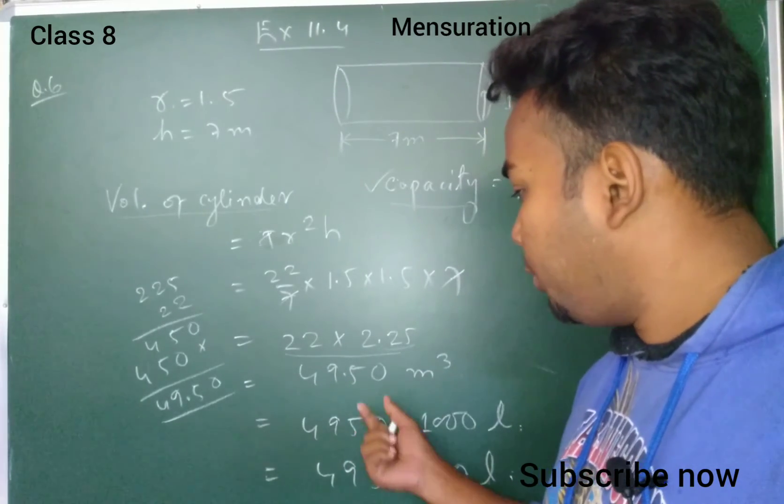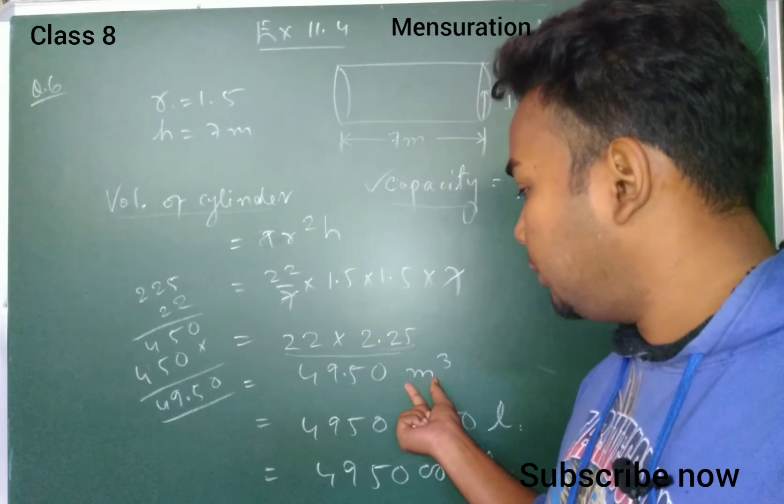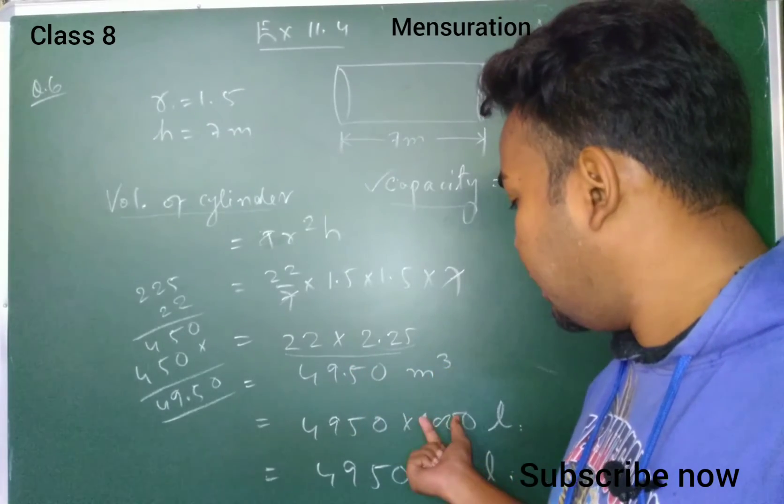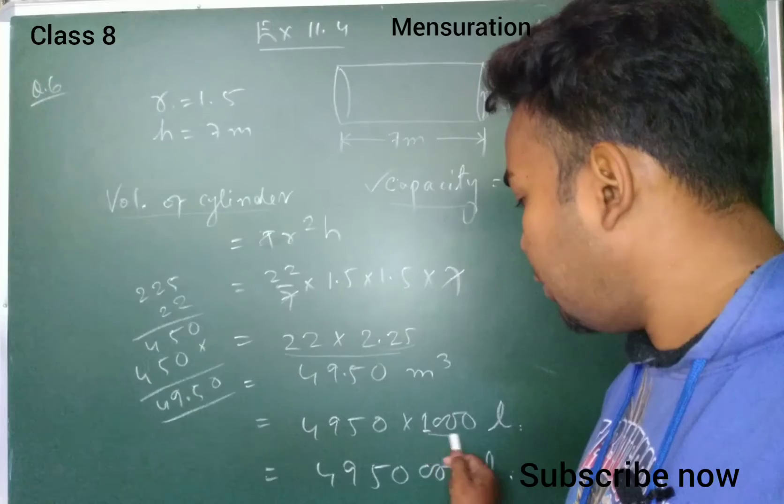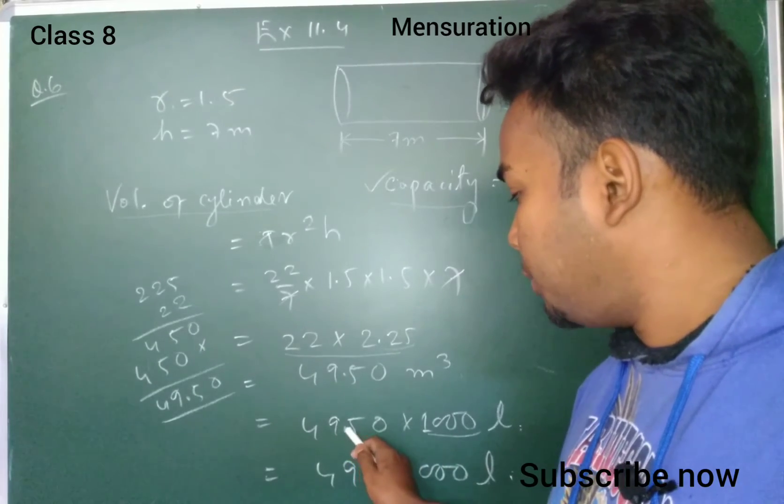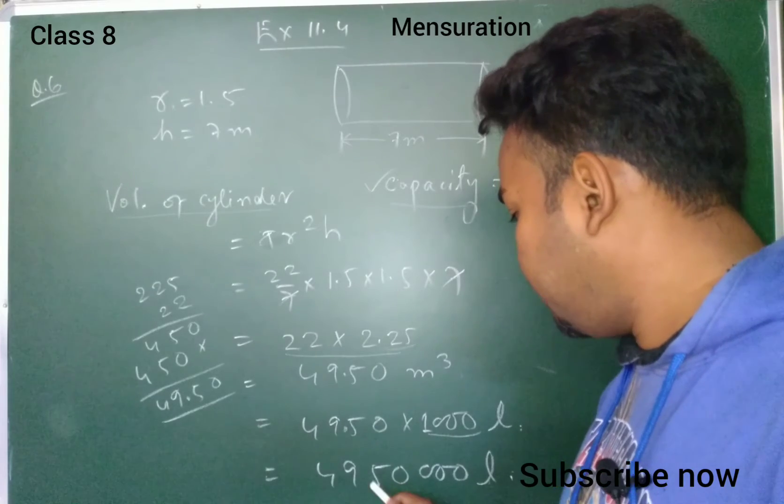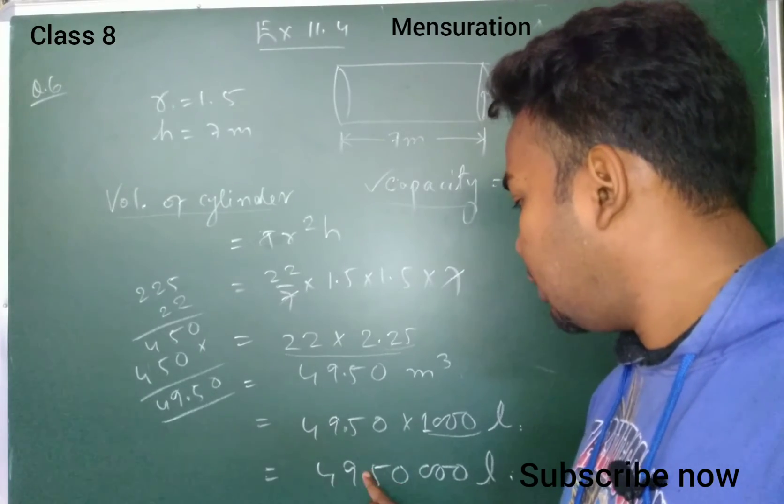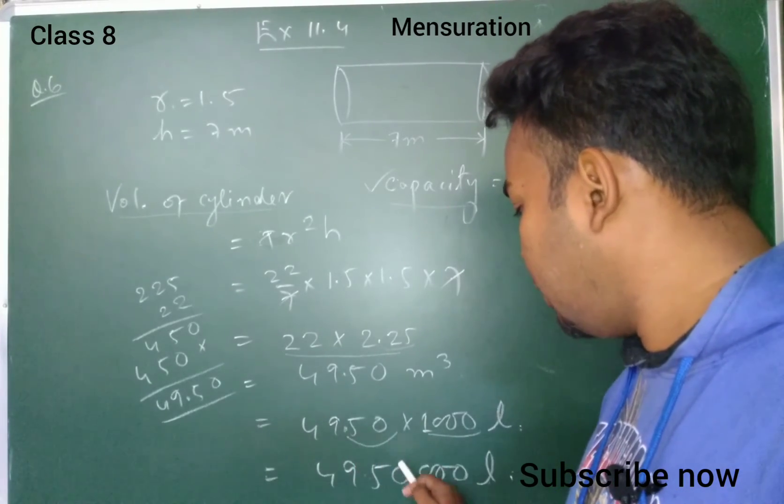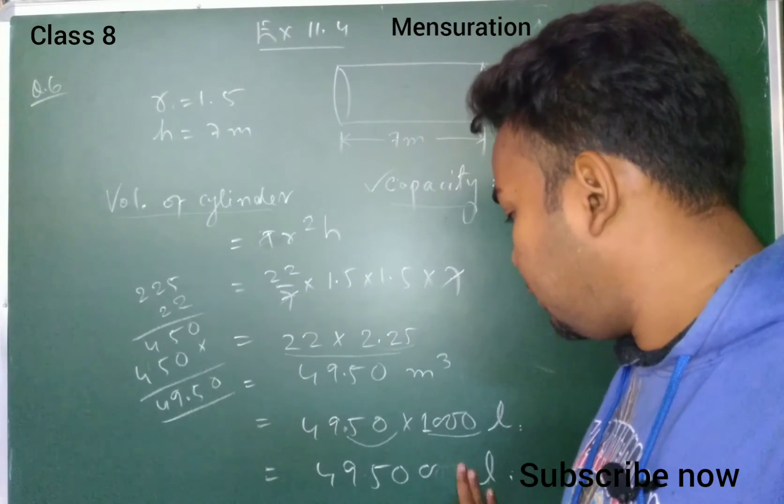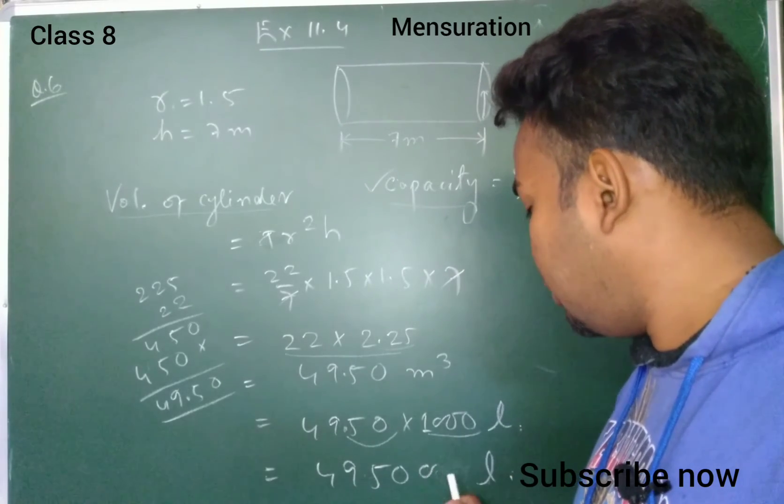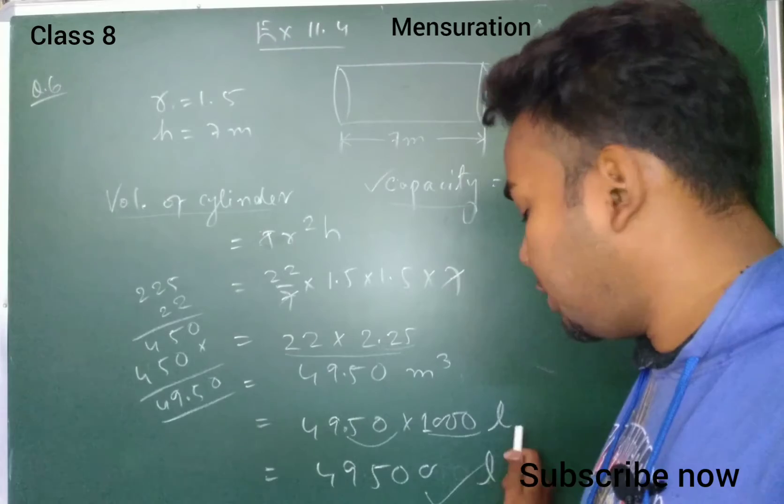To convert volume to liters, we multiply by 1000. So 49.50 times 1000 equals 4950 liters. That is the answer. Thank you.